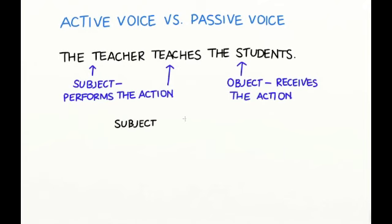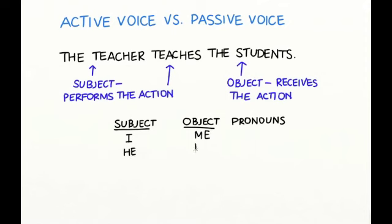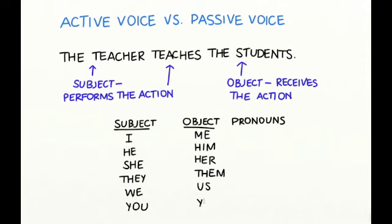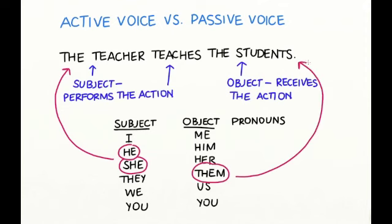In English, we have subject and object pronouns. For example, I is a subject pronoun while me is an object pronoun. He is a subject pronoun and him is an object pronoun. She is a subject and her is an object, and so on. In active sentences, subject pronouns can take the place of the subject, and object pronouns can take the place of the object.